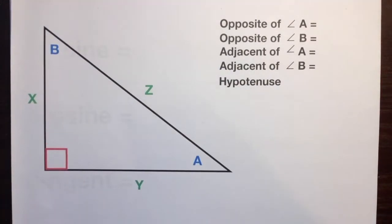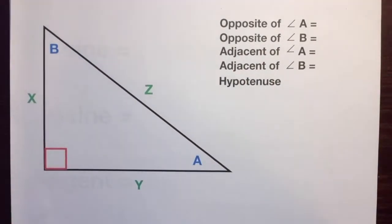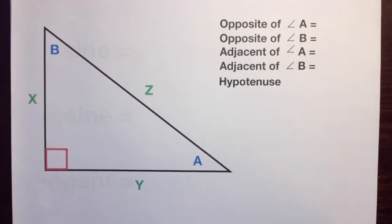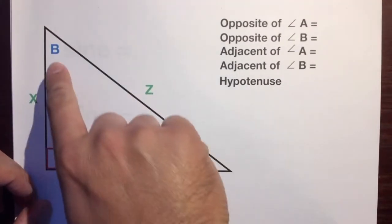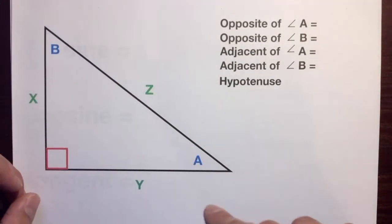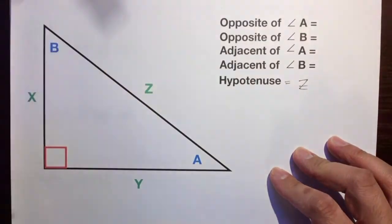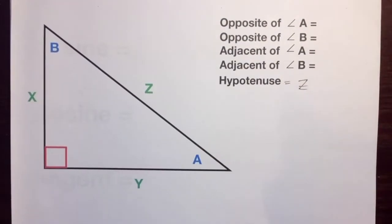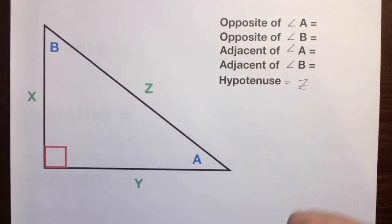So the hypotenuse is the side — press pause, draw this in your notebooks, make sure that it's drawn in your notebooks, and then follow along. Okay, unpause. The hypotenuse is the side that is opposite the 90-degree angle, and it's the longest side because it's opposite the biggest angle out of the three angles. So the hypotenuse is side Z. That should be automatic — hopefully you guys know that one.